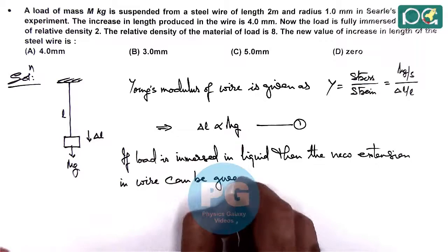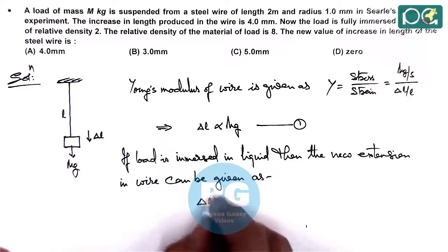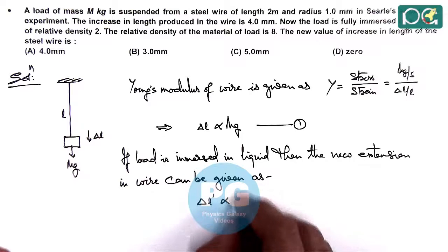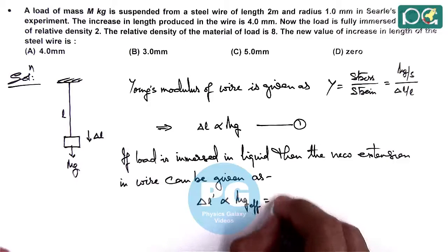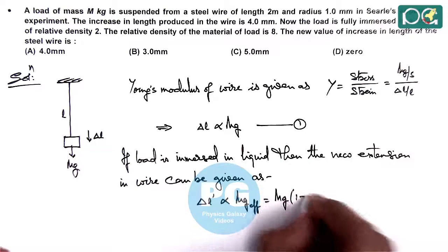Delta L dash, which is proportional to the effective weight Mg effective, and that can be written as Mg times 1 minus rho of liquid by rho of solid.